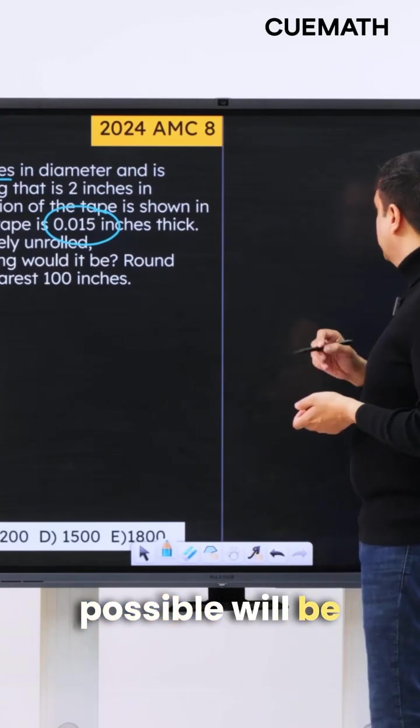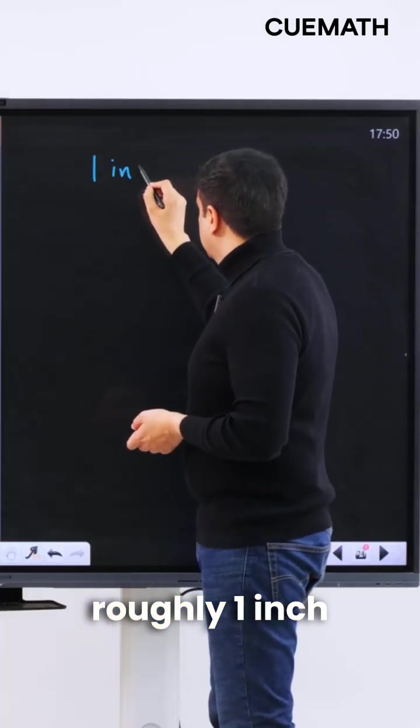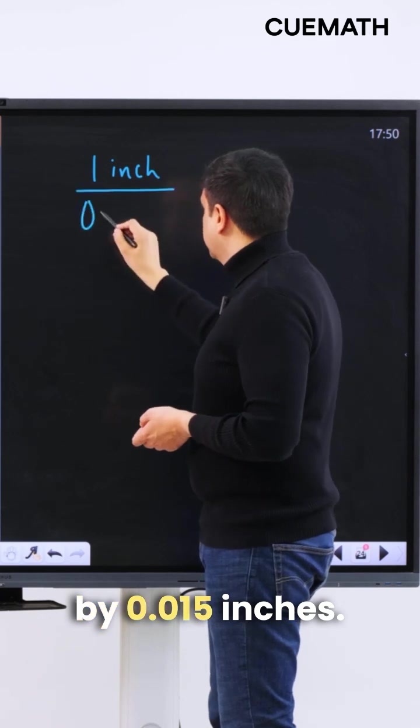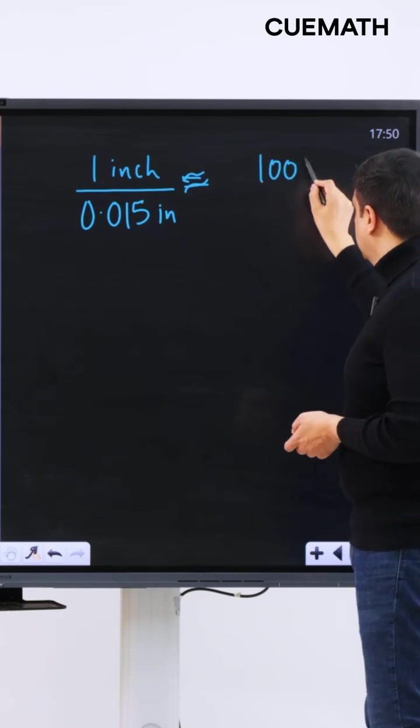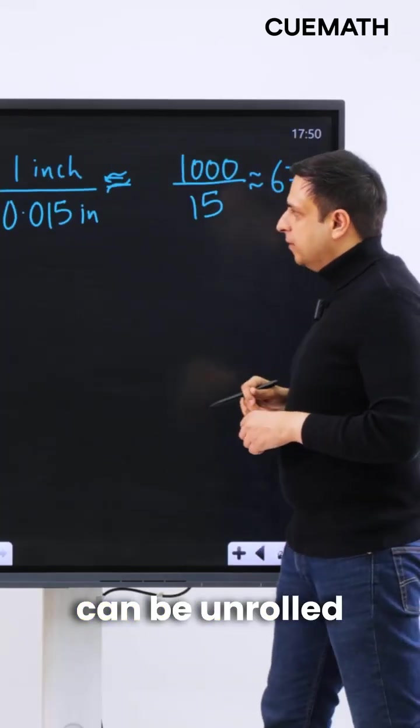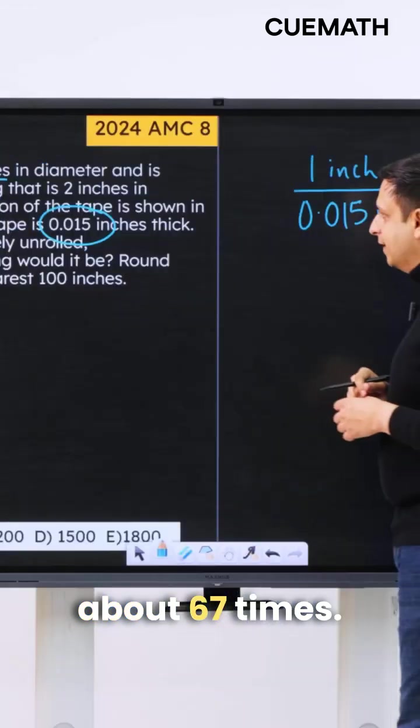So the total number of unrolls possible will be roughly 1 inch divided by 0.015 inches. So the tape can be unrolled about 67 times.